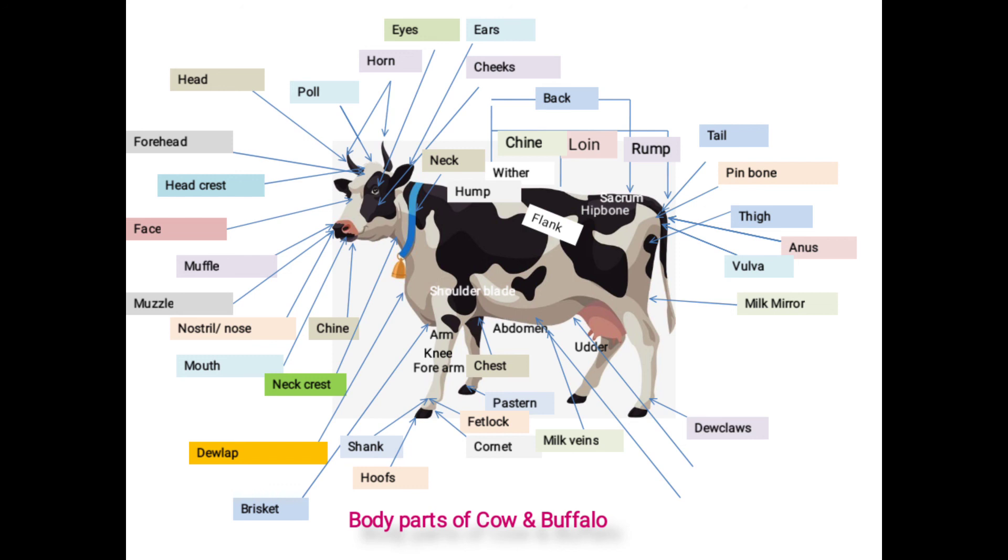Then scrotum: a male genital organ which is pouch or bag-like structure in between two hind legs which accommodates testicles, and it is present only in males. It regulates the temperature for sperm production. Last one is sheath: it is a skin or flap which is covered penis and attached to the body, which is extended up to navel flap. And it protects the penis from the external injury. Scrotum and sheath is present in the male.